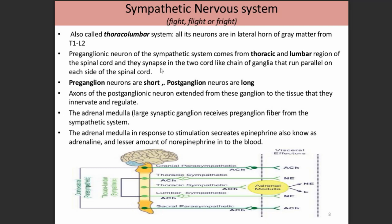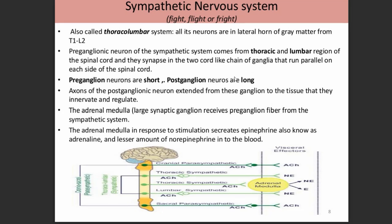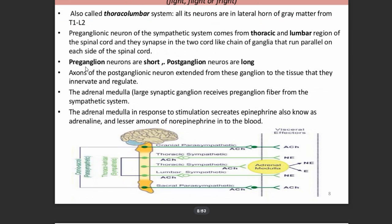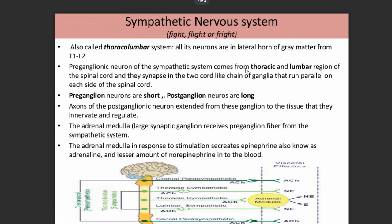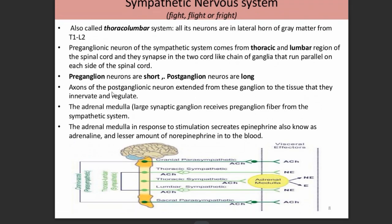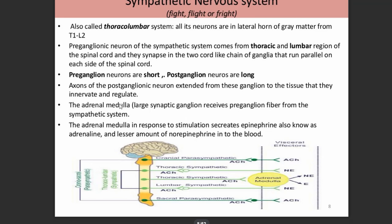Preganglionic neurons of the sympathetic system are mostly short, whereas the postganglionic neurons are long. The axons of postganglionic neurons extend from the ganglion to the tissue they innervate and regulate. The adrenal medulla is a large synaptic ganglion that receives only preganglionic fibers from the sympathetic system — it has no postganglionic fibers, because being a large ganglion, it does not need them.